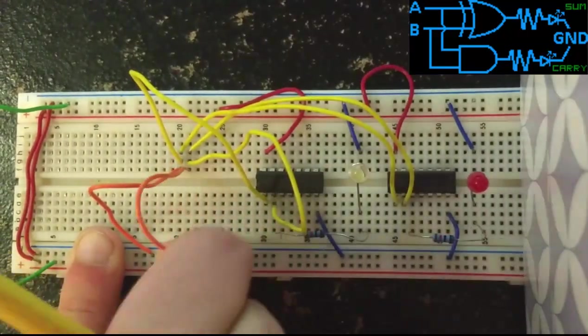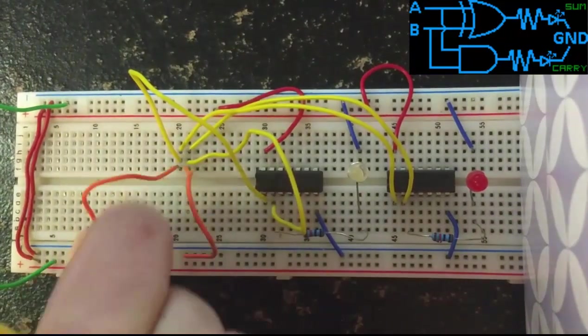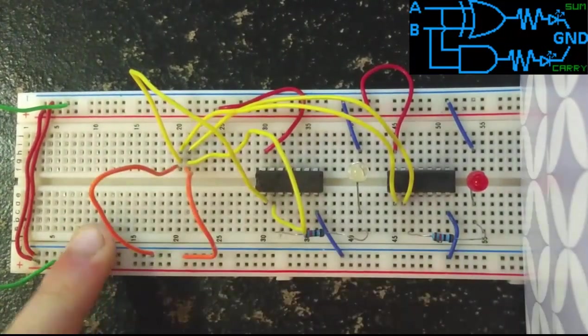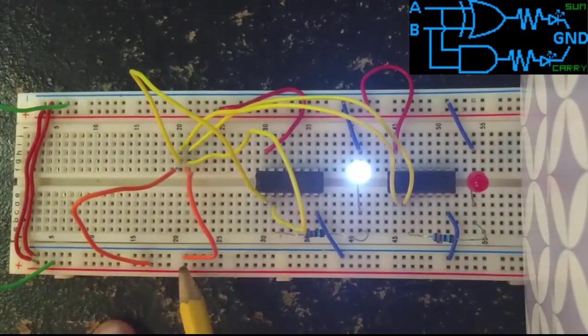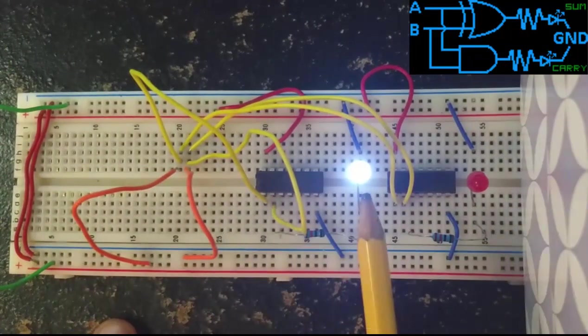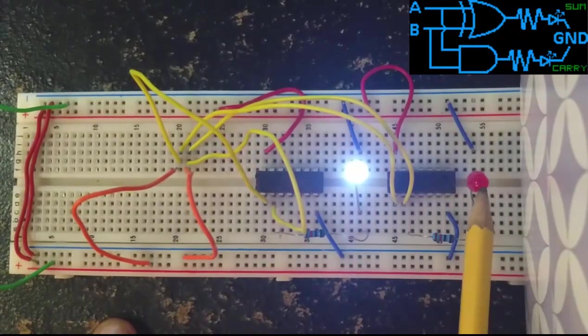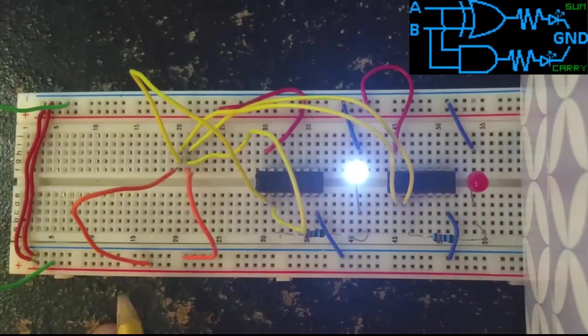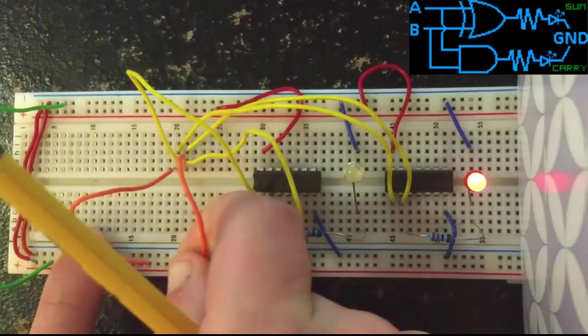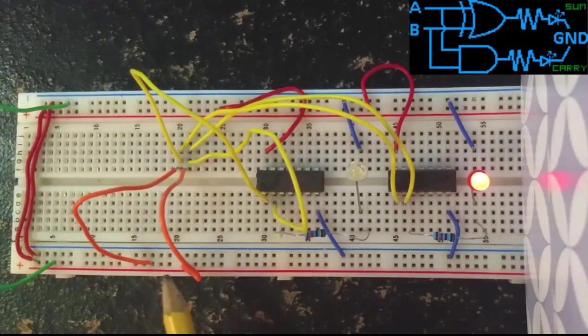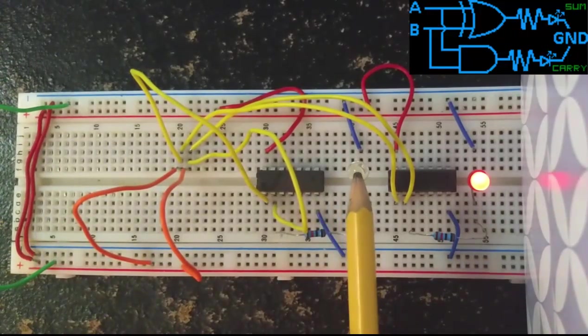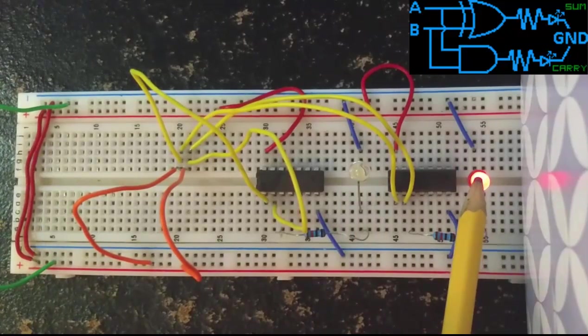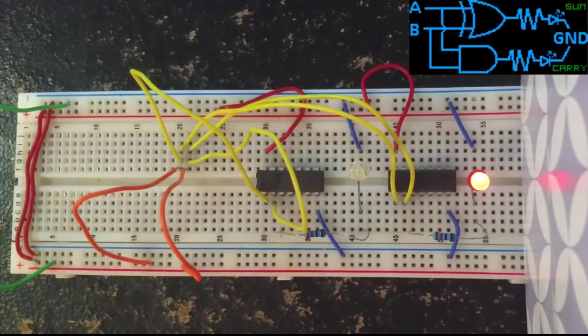If we do the opposite, we should get the exact same thing. So, if we move input A instead, if I can get it out, and move that over to positive power, now we have 1 plus 0, and that, of course, still gets us the same thing, a sum bit of 1 and no carry. And, of course, if we add 1 plus 1, so if I move input B also to positive power, now we have 1 plus 1, and we have no sum bit, remember our sum bit is 0 in this case, but we have our carry bit illuminated, meaning that we have the value of 2. So, this is our half adder.